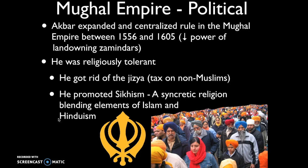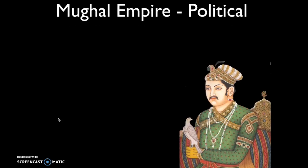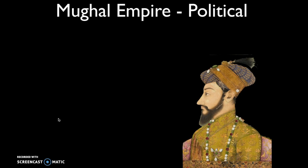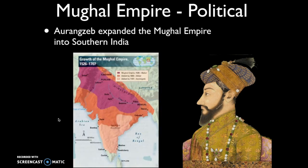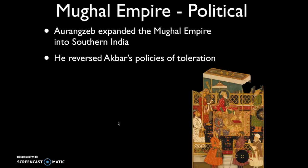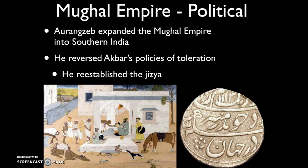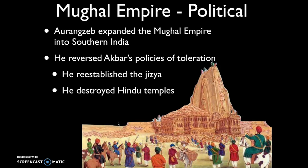After Akbar died, his grandson Aurangzeb became ruler. Aurangzeb expanded the Mughal Empire into southern India. While Akbar is generally viewed as tolerant, Aurangzeb was the opposite — he reversed Akbar's policies of toleration, re-establishing the jizya tax on Hindus and Sikhs.